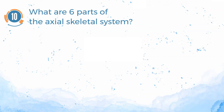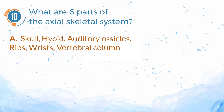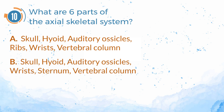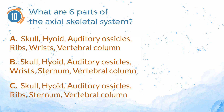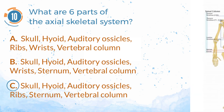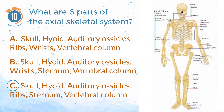Number 10. What are the six parts of the axial skeletal system? A. Skull, hyoid, auditory ossicles, ribs, wrists, vertebral column. B. Skull, hyoid, auditory ossicles, wrists, sternum, vertebral column. C. Skull, hyoid, auditory ossicles, ribs, sternum, vertebral column. The answer is C — skull, hyoid, auditory ossicles, ribs, sternum, vertebral column. The axial skeleton runs along the body's midline axis and is made up of 80 bones in the following regions: skull, hyoid, auditory ossicles, ribs, sternum, vertebral column.